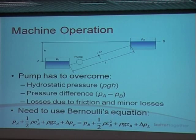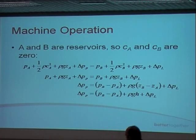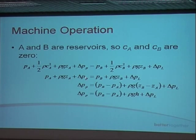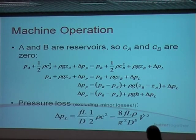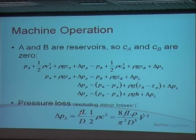We've got ΔPP and then the losses, which are the minor losses and friction. A and B are reservoirs so CA and CB are zero, so those terms drop out. On one side we've got the A terms plus the pressure rise due to the pump, and on the other side the B terms and pressure loss. Rearranging, we get PB minus PA, plus ρg(ZB minus ZA), which we can replace with ρgH, plus the losses. For the pressure loss excluding minor losses, that's FL/D times the dynamic pressure (one half ρC²), which you should all be familiar with.